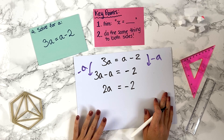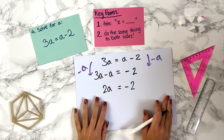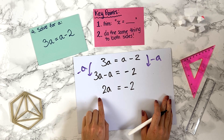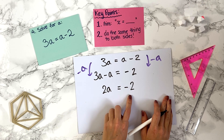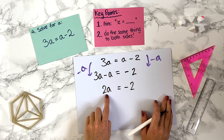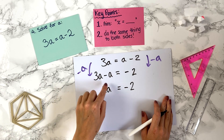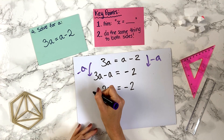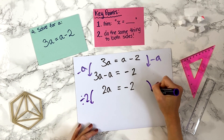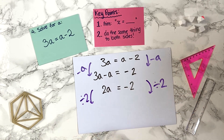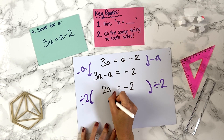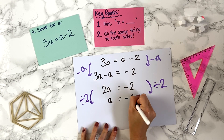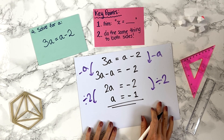We've got the a's on one side and numbers on the other. We now want a on its own. We have 2 times a equals minus 2, so to go from 2a to a we divide by 2. We divide both sides by 2. Minus 2 divided by 2 is minus 1. So the answer is a equals minus 1.